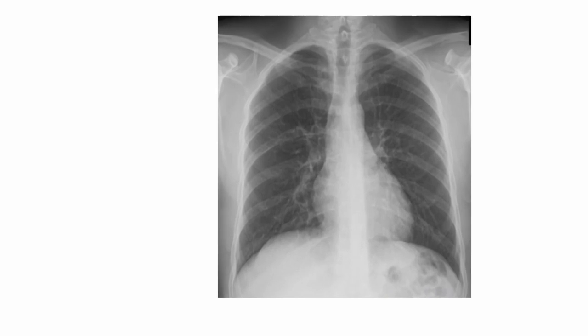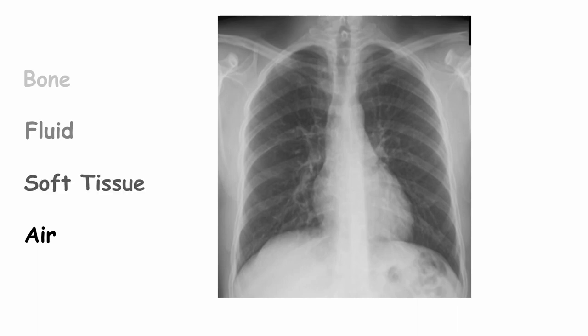Denser tissues, such as bone, appear white as fewer X-rays have passed through. Less dense tissue, such as air in the lungs, appears black as X-rays are more able to pass through. Less dense than bone is fluid, which will appear slightly less white than bone. Less dense than fluid is soft tissue, which therefore appears slightly less white than fluid.